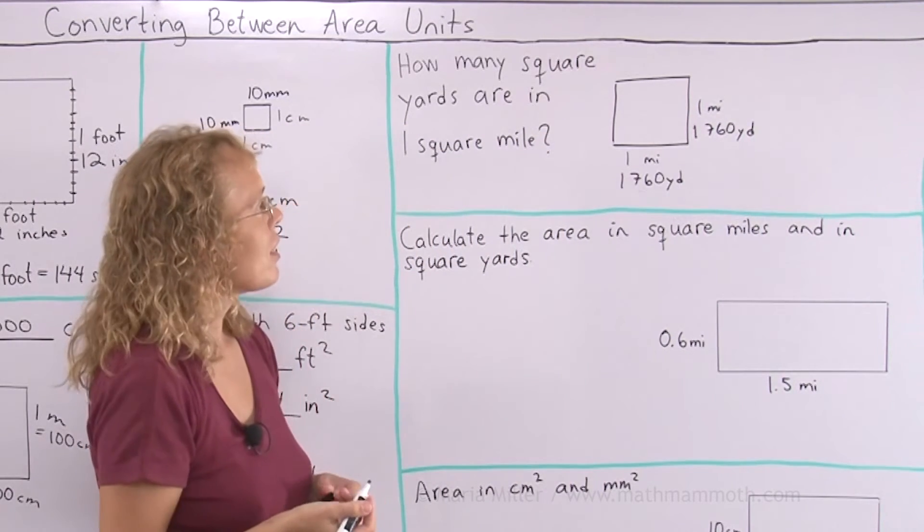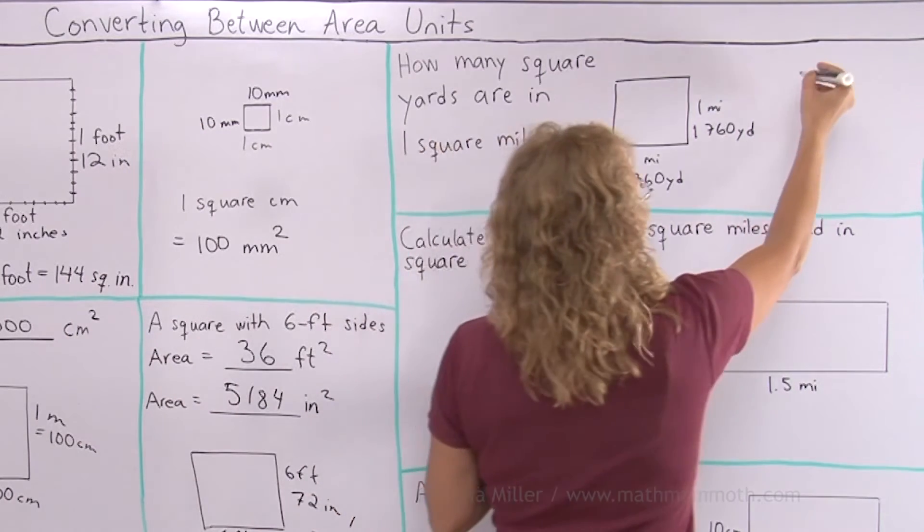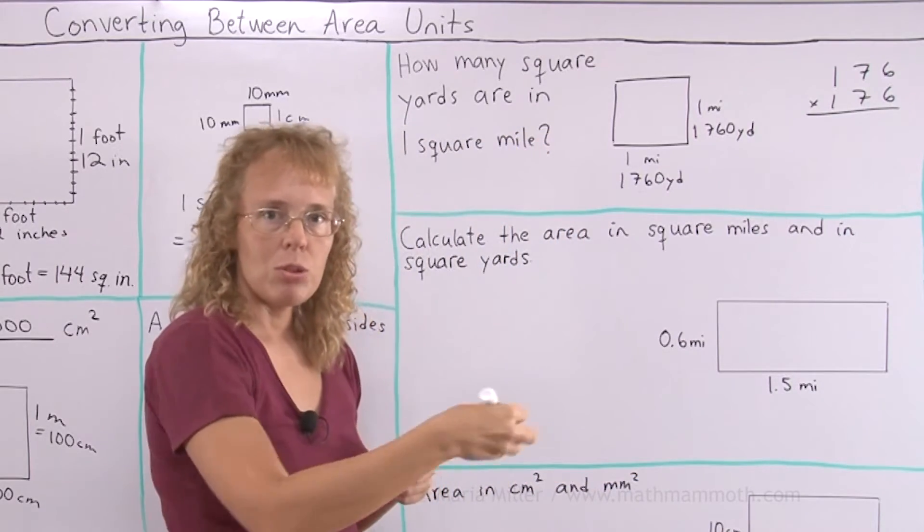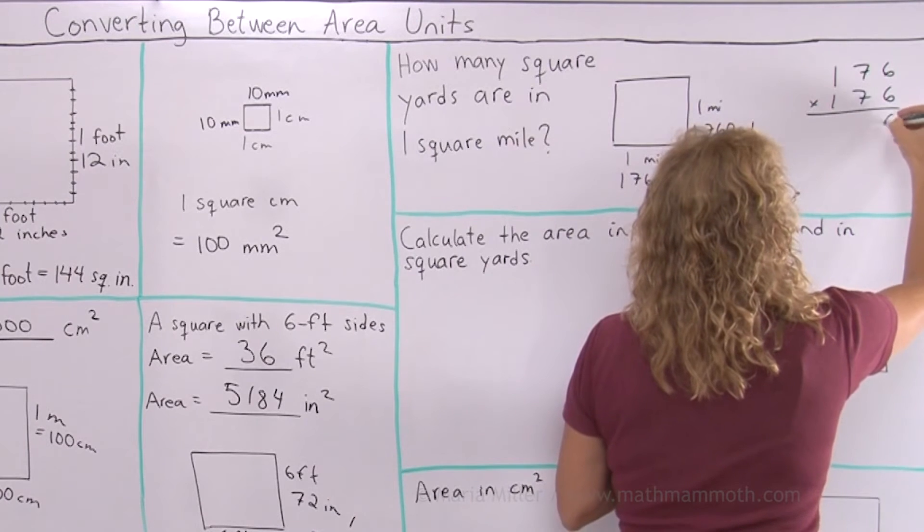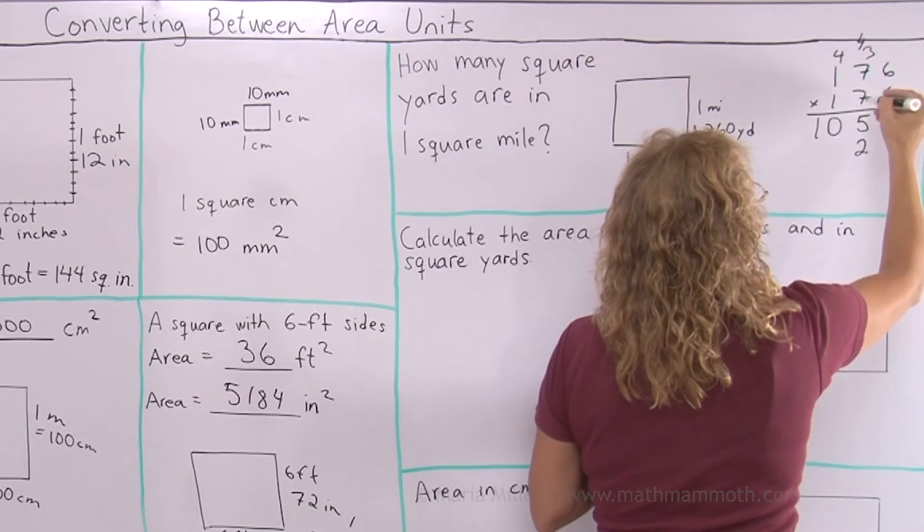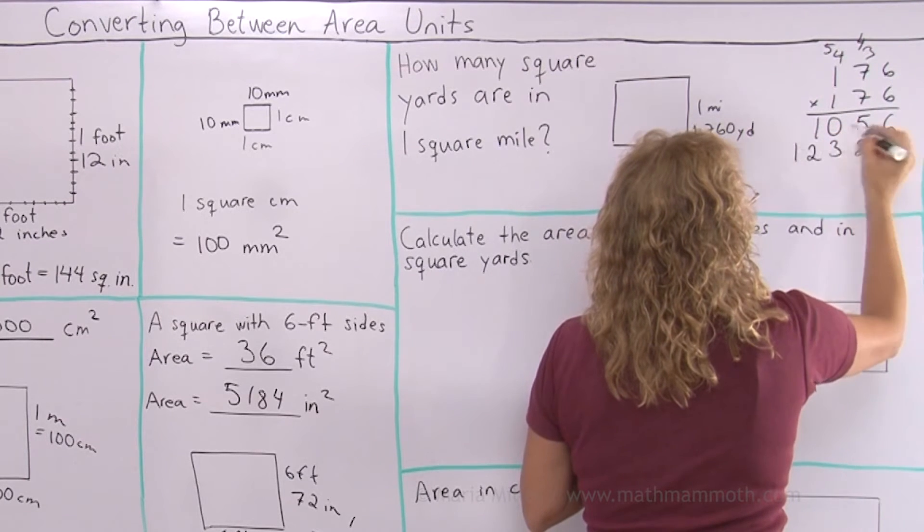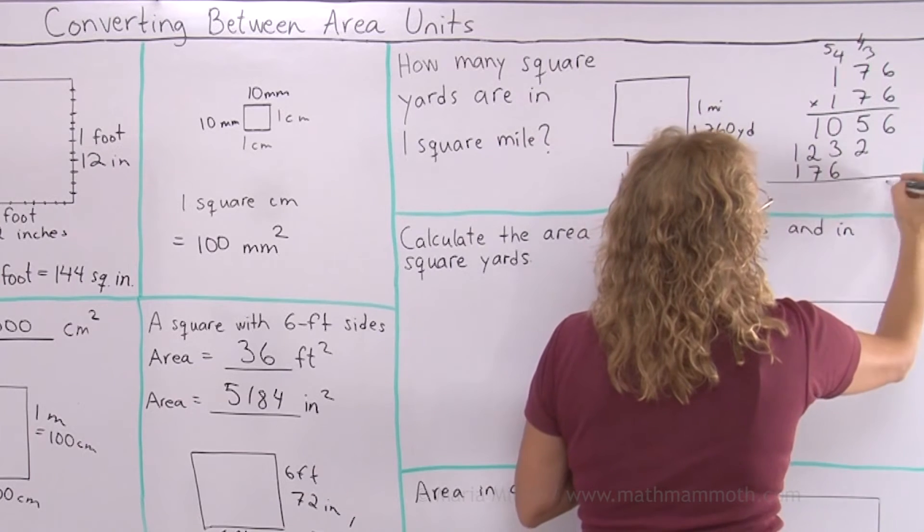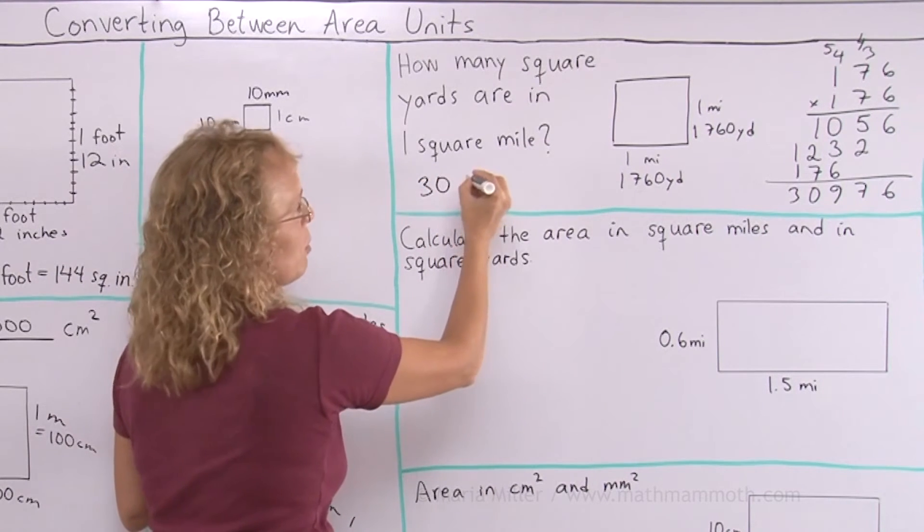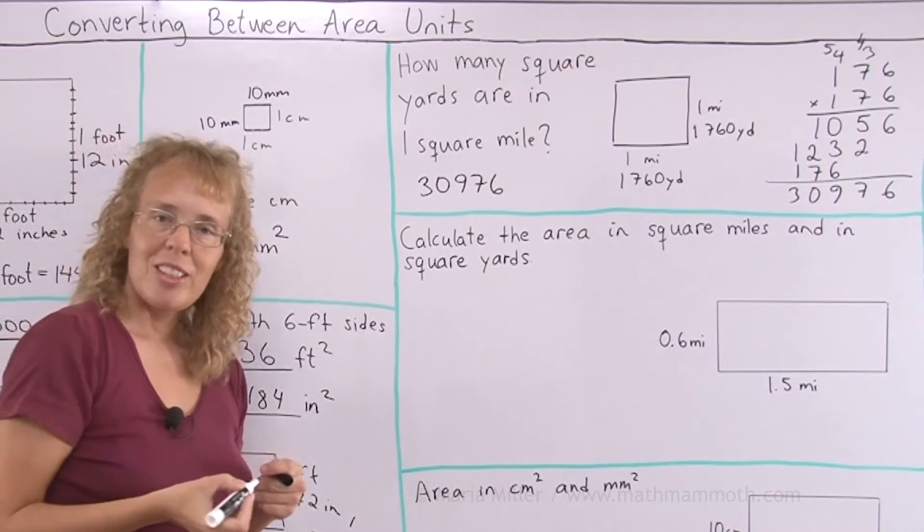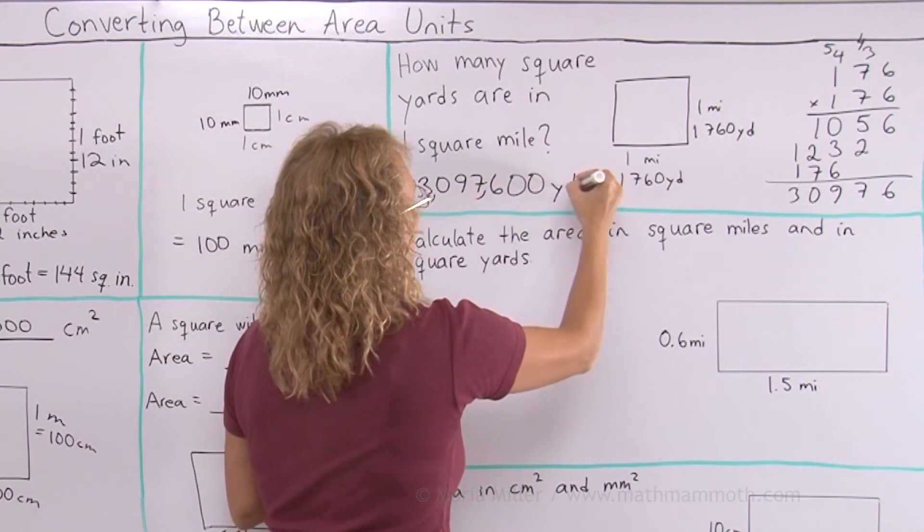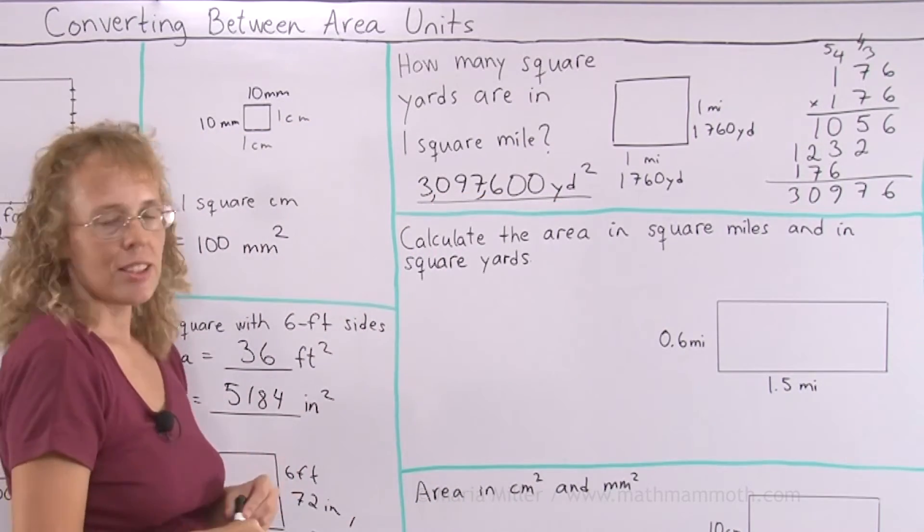Now we will multiply 1760 times 1760. Since both numbers end in zeros, I can use a little shortcut and just multiply 176 times 176. Once I get my answer, I will tag two zeros to it, because there's a zero here, a zero here. Six times six is 36, then 45, and then 10. Seven times six, 42, then 53, and 12. And then six, seven, one. We got the answer, but remember, I need to tag two zeros to this. That's my final answer: 3,097,600 square yards in a square mile.